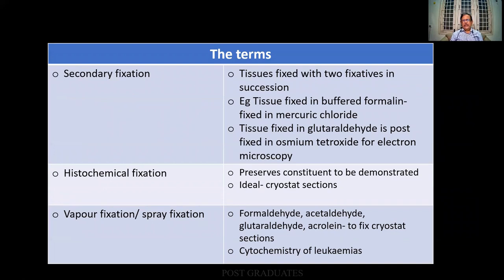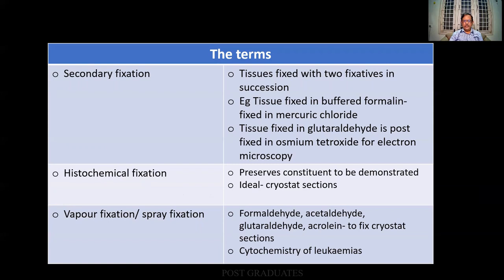There are some terms. If you are going to answer very well in your exam, they might go to the second level of questions. Please do not underestimate the examiners. There is something called secondary fixation or post-fixation — after the primary fixation is done, a second fixative makes a corresponding alteration. For example, fixed in glutaraldehyde is post-fixed in osmium tetroxide for electron microscopy. Histochemical fixation preserves the constituents to be demonstrated. Ideally we will have to do a cryostat so that it bypasses all the chemicals. Vapor fixation can be done for slides, particularly a leukemia slide — formal vapor is done for fixation and then cytochemistry is performed on the leukemia.